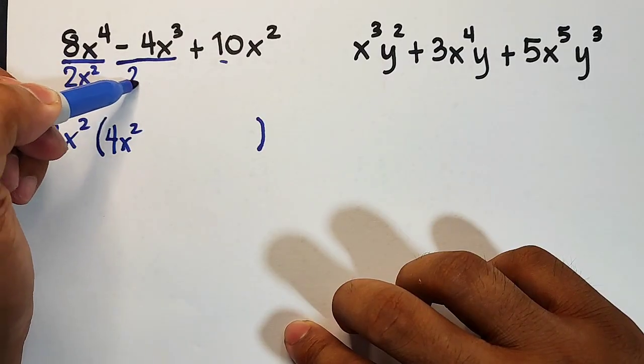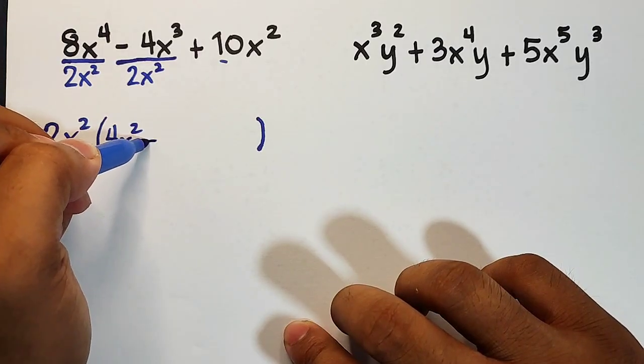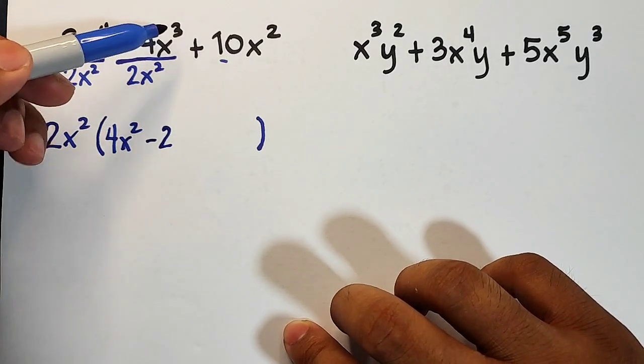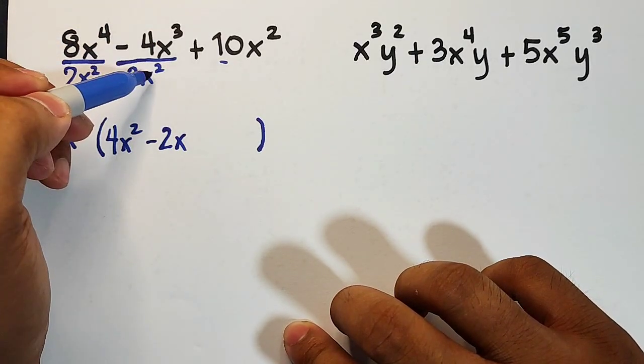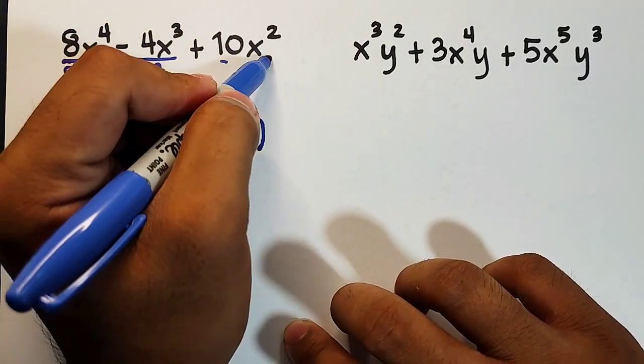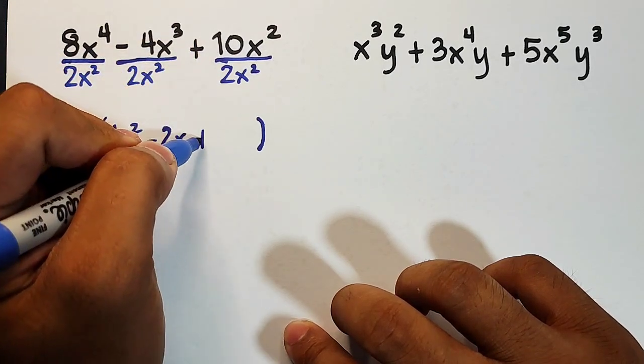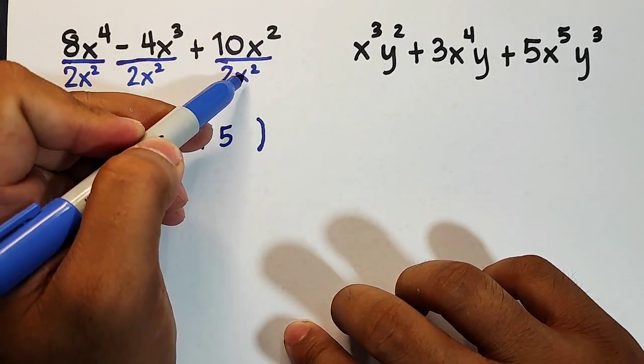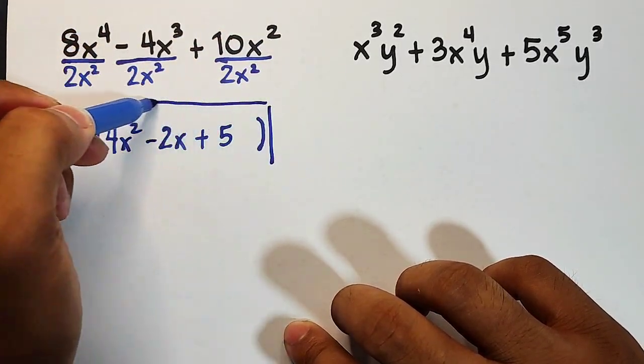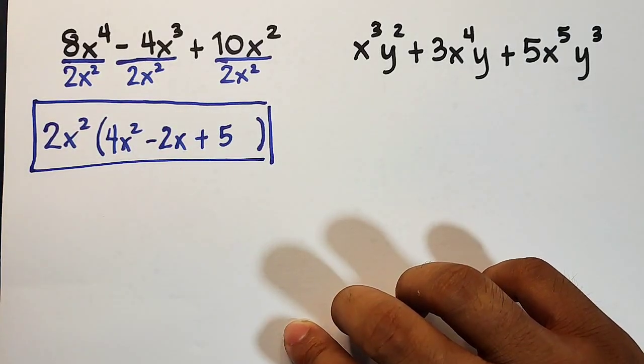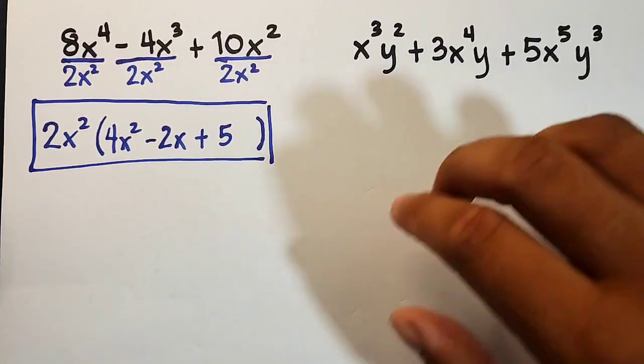Next, this term divided by 2x²: -4 divided by 2 is -2, and x³ divided by x² is x, since 3 minus 2 is 1. Then divide this by 2x²: 10 divided by 2 is 5, positive. x² over x² simply cancels. So the factors are now 2x²(4x² - 2x + 5).